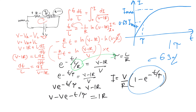The derivation is almost the same as for RC circuits, but the difference is: for RC, τ = RC; for LR, τ = L/R.